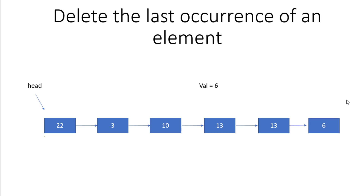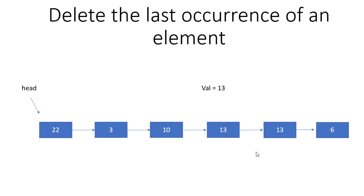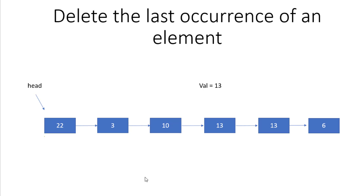The fourth case is when the element sits in the middle of the linked list. Since we know the next node exists, we copy the next node's data into the current node, then change the linking: temp.next equals temp.next.next. This effectively removes the target node from the middle of the list.